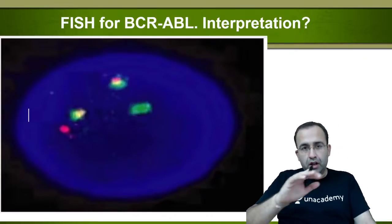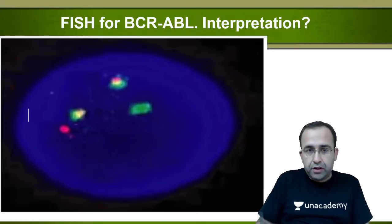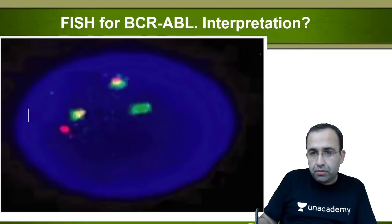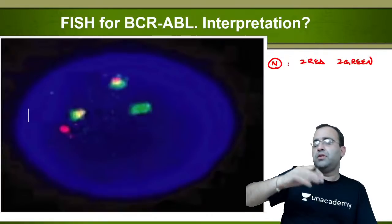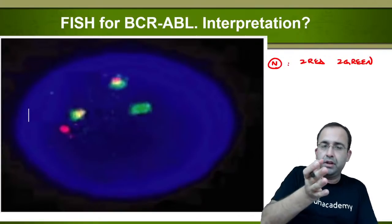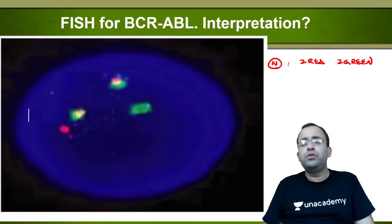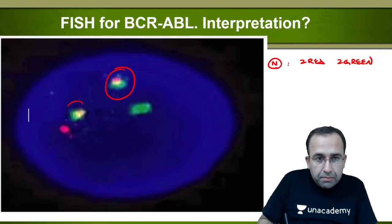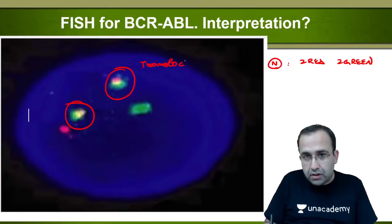FISH for BCR-ABL: normally there should be two red signals and two green signals. If a third yellow signal appears, it means translocation has occurred — BCR-ABL positive.